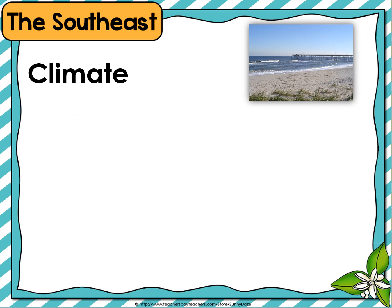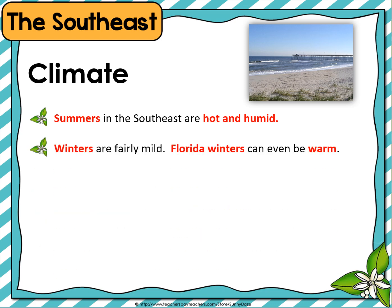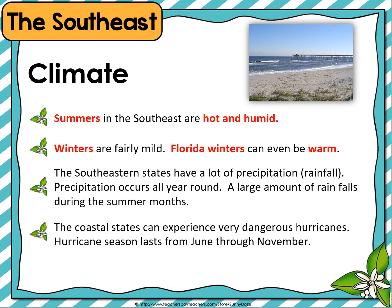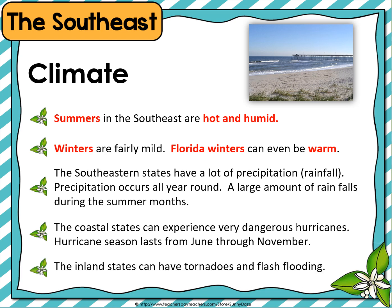The climate of the southeast. Summers in the southeast are hot and humid. Winters are fairly mild. Florida winters can even be warm. The southeastern states have a lot of precipitation or rainfall. Precipitation occurs all year round, with a large amount of rain falling during the summer months. The coastal states can experience very dangerous hurricanes. Hurricane season lasts from June through November. The inland states can have tornadoes and flash flooding.